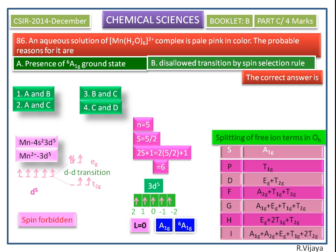Once again, we see the question. An aqueous solution of hexa aqua manganese 2 complex is pale pink in color. The probable reason for it are A and B, that is, presence of 6A1g ground state and disallowed transition by spin selection rule. Option 1 is the correct answer.